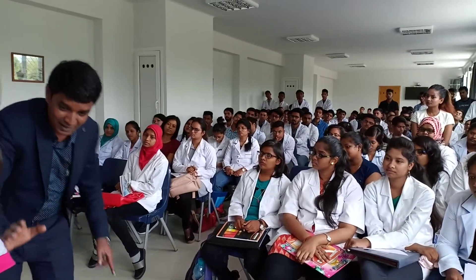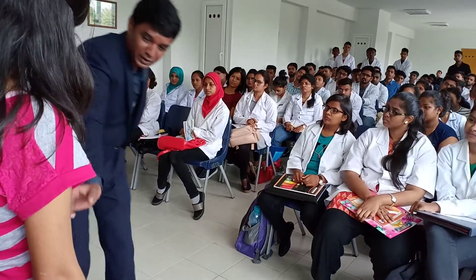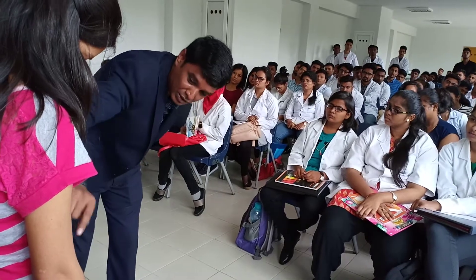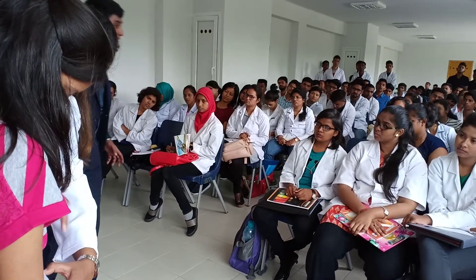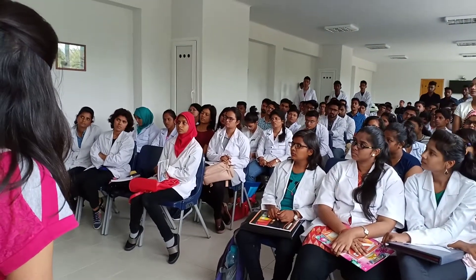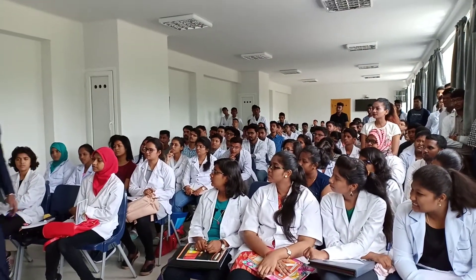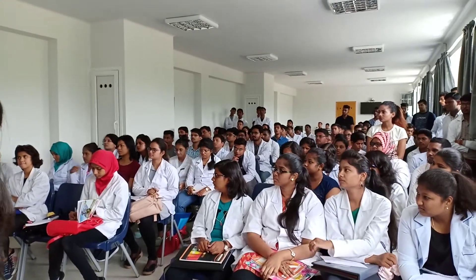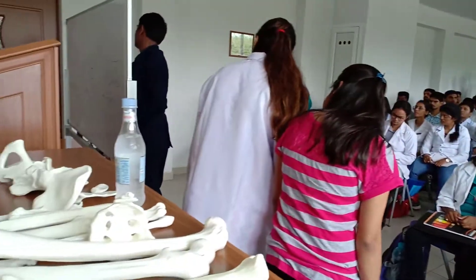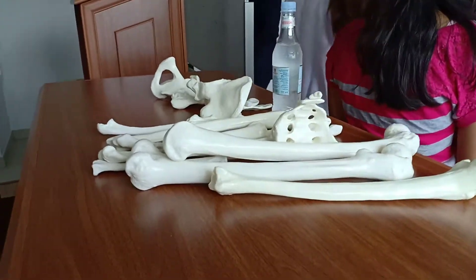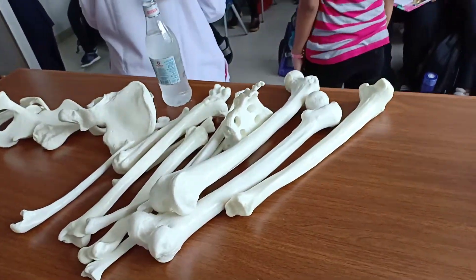You divide this line into medial two-thirds and lateral one-third. This is the medial one-third and lateral two-thirds. Just divide it and mark a point there. That point is called McBurney's Point. What is that called? McBurney's Point.